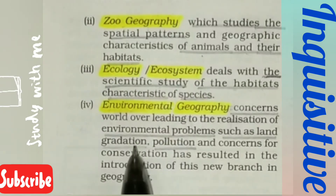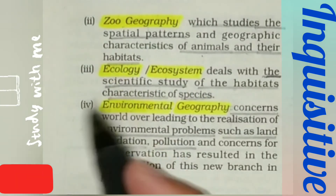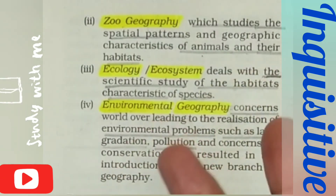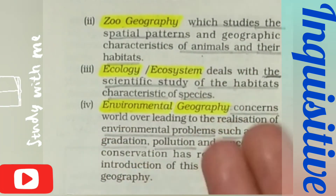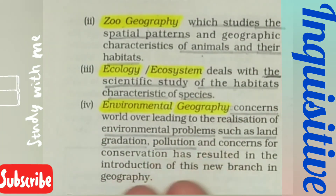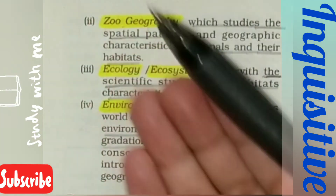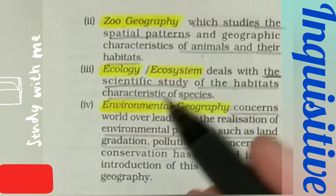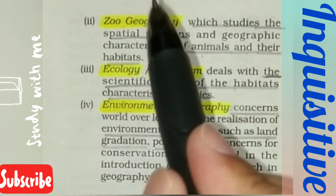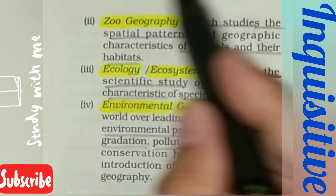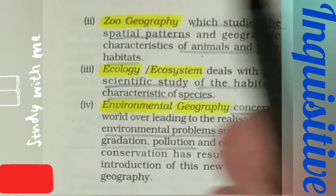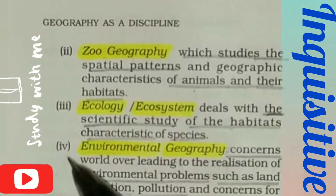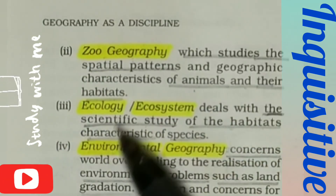So that's it for systematic geography. As you have seen, we covered everything systematically — physical, human, and biogeography are the three main branches, each further divided into sub-categories. To better understand this topic, make sure to also study the difference between systematic and regional geography. Hope this topic is clear to you. Thanks for watching.